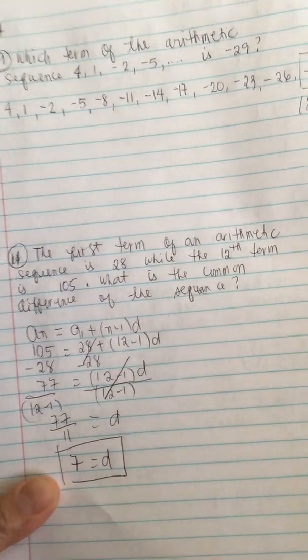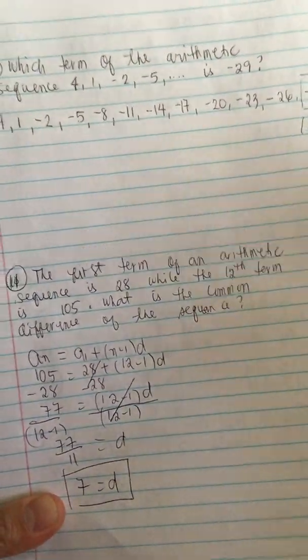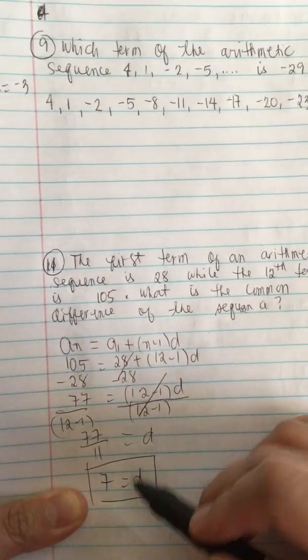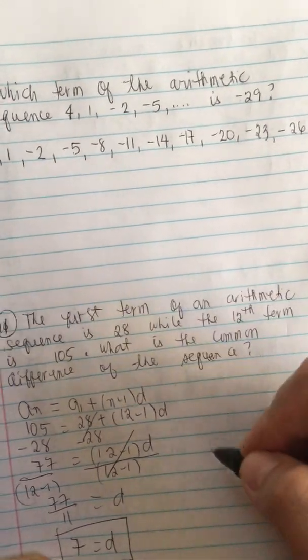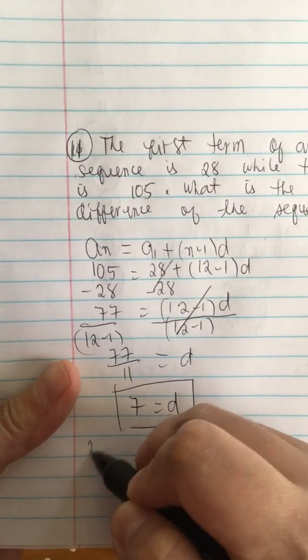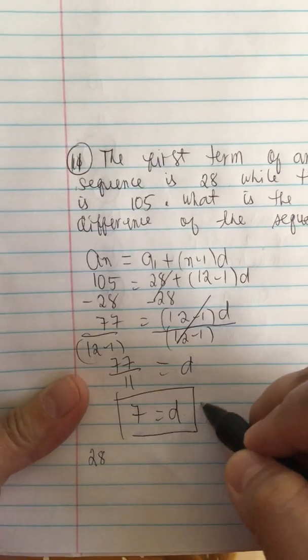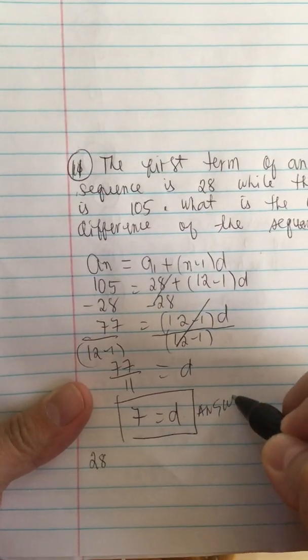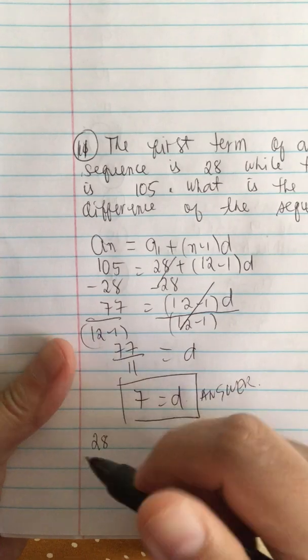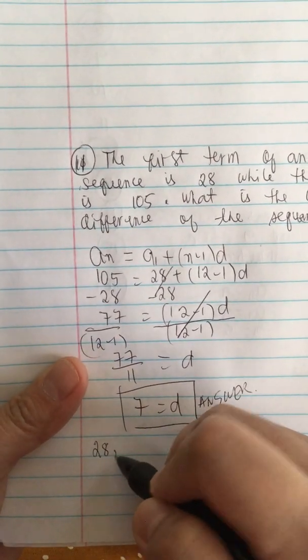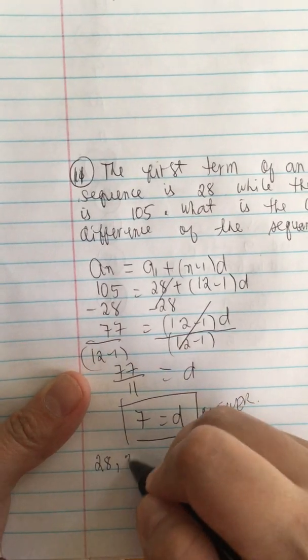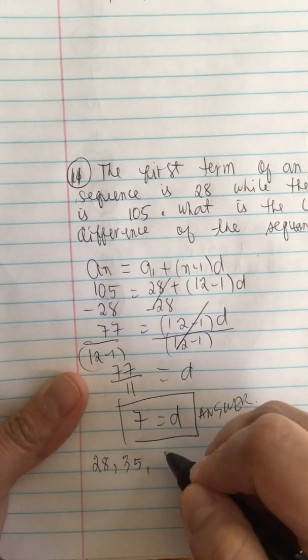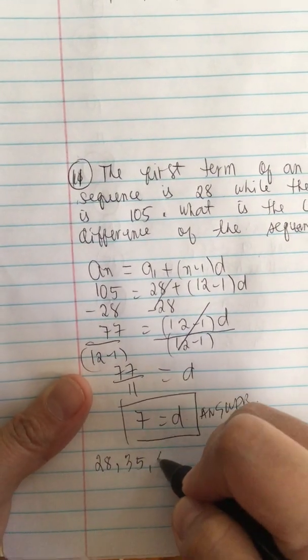Now we can check our answer if it is right. So we just write down the terms. So the first term is 28. So we write it down here, 28. So this is the answer. So we just check our answer. So 28. So 28 plus 7 is 35. And then plus another 7 is 42. Plus 7 is 49.